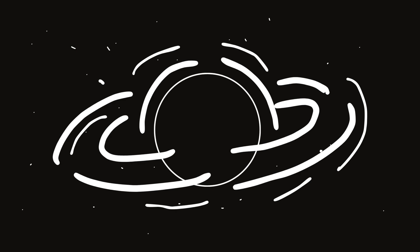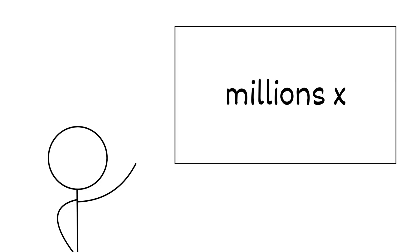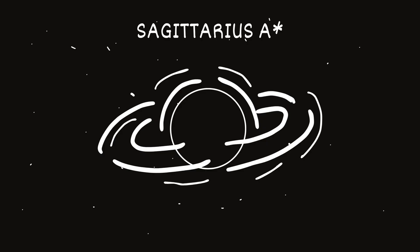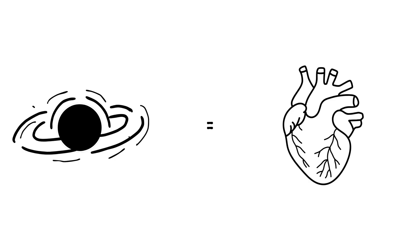Supermassive black holes. Every galaxy, including ours, has one of these monsters at the center. They're called supermassive black holes, and the name is pretty literal. They're millions, sometimes billions of times heavier than the sun. Our galaxy's black hole is called Sagittarius A*, and it's about 4 million solar masses.